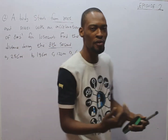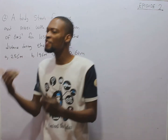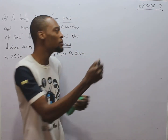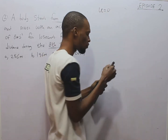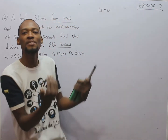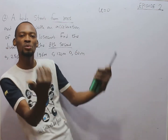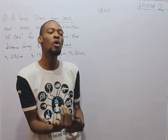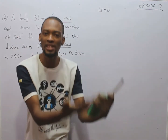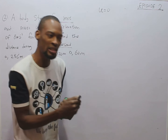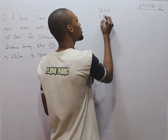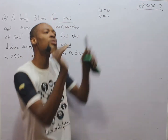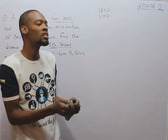It says a body starts from rest. Anytime in physics you are told that a body starts from rest, it simply means that initial velocity U is equal to 0. And in physics, if you are told that a body comes to rest or goes to rest, final velocity V is equal to 0. So when starting from rest, initial velocity is 0; when you go to rest, final velocity is 0.